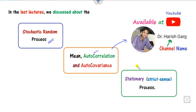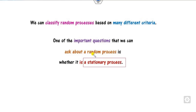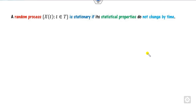Now in this lecture we will see about what is the stationary process. As we discussed, we can classify the random process based on different criteria. One important question that can be addressed about the random process is: what is meant by the stationary process, and under what condition can you say the random process X(t), where t belongs to any index set, is stationary or not? Any process is said to be stationary if its statistical property does not change with respect to time — that is, with respect to the PDF or CDF.